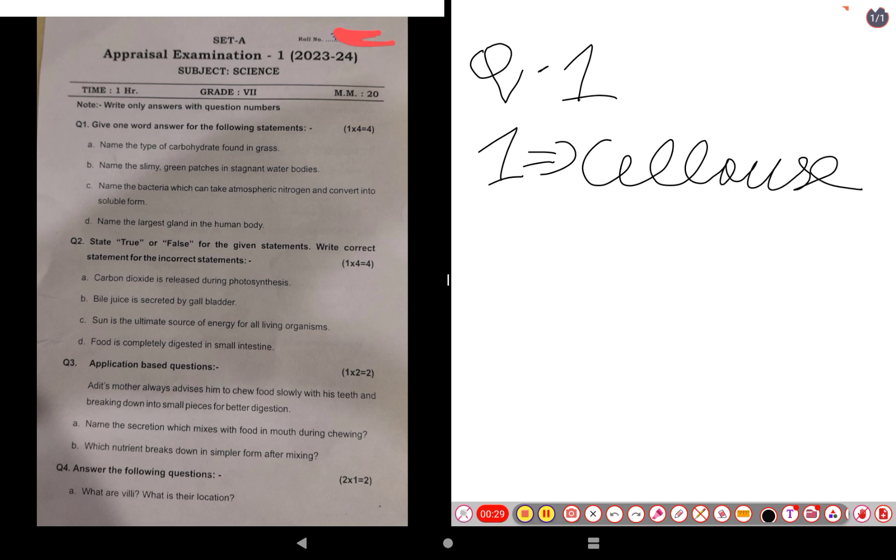Let's go to the second one. Name the slimy green patches in stagnant water. The slimy green patches in stagnant water is algae, so our answer is algae, A-L-G-A-E.